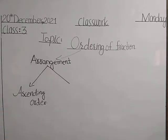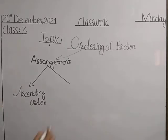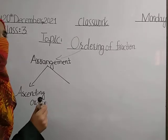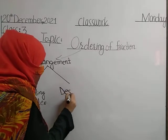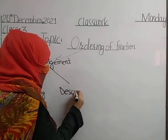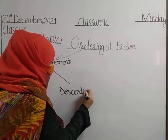Tarteep se rakhna, tarteep se numbers ko rakhna. So ordering means arrangement, and arrangement has two types: first is ascending order, and second is descending order.